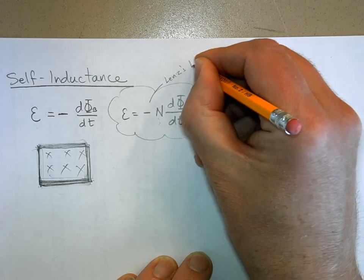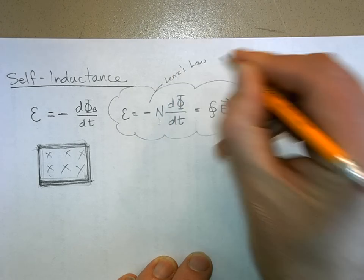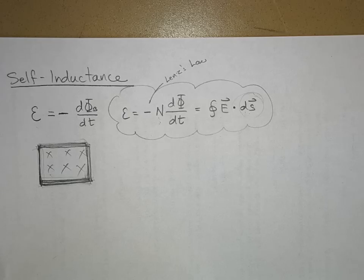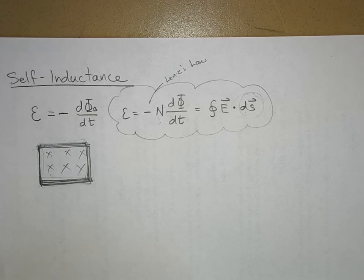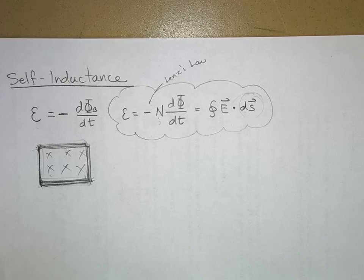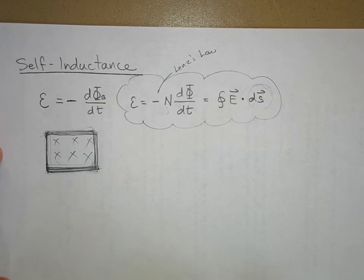That's Faraday's law, and remember the negative sign is where we get Lenz's law from. Lenz's law says the changing flux will create a voltage that drives a current that creates a magnetic field that opposes the rate of change — 'oppose' is what that negative sign means.